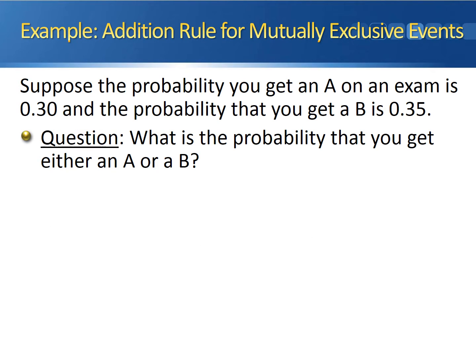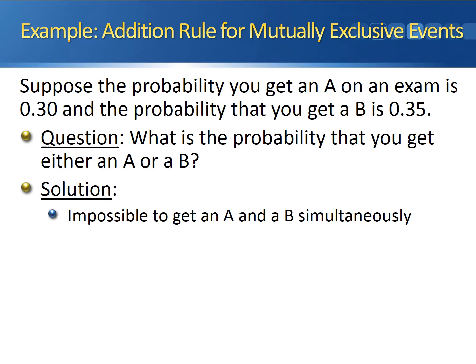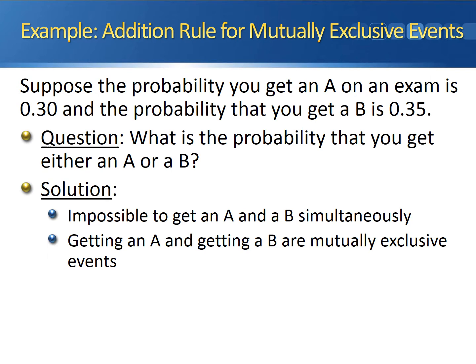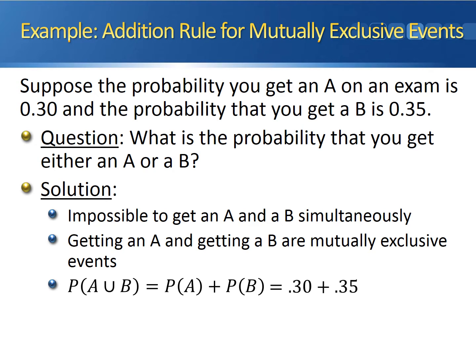Let's look at an example of the addition rule for mutually exclusive events. Suppose the probability of getting an A on an exam is 0.3, and the probability of getting a B is 0.35. We want to know the probability of getting either an A or a B. It's impossible to get both an A and a B simultaneously — getting an A and getting a B are mutually exclusive events. So the probability of their union is the sum of their individual probabilities: P(A or B) = 0.3 + 0.35 = 0.65.